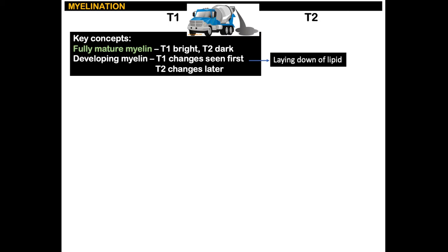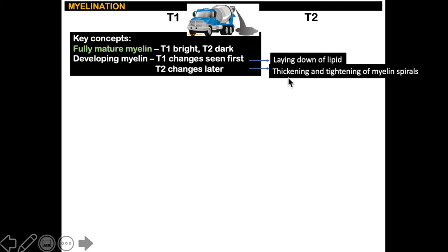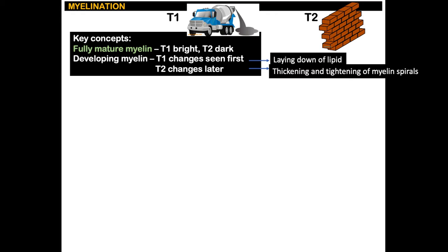The T1 changes are due to the laying down of lipid — picture a cement truck laying down lipid, one of the components of myelin. The T2 changes come later, due to the thickening and tightening of the myelin spirals, with the myelin becoming more solid appearing.